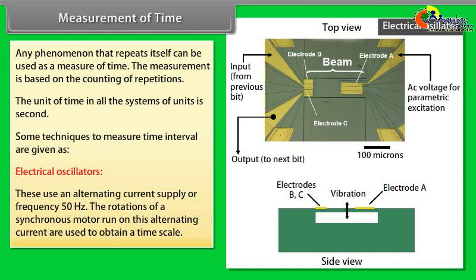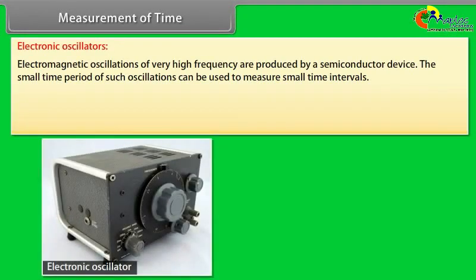Electrical oscillators: these use an alternating current supply of frequency 50 hertz. The rotations of a synchronous motor run on this alternating current are used to obtain a time scale. Electronic oscillators: electromagnetic oscillations of very high frequency are produced by a semiconductor device.